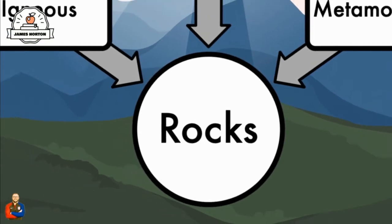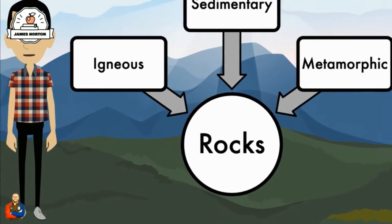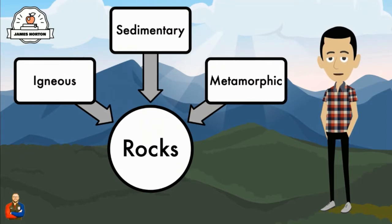First and foremost, rocks are made of minerals. Rocks can be classified into three categories that include igneous, sedimentary, and metamorphic.